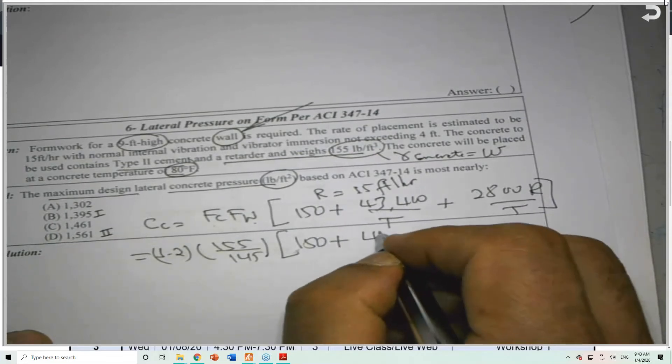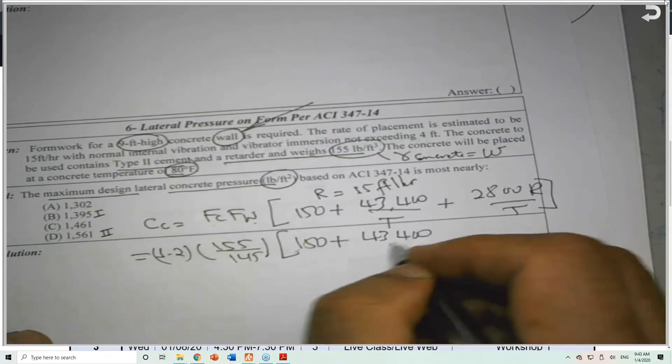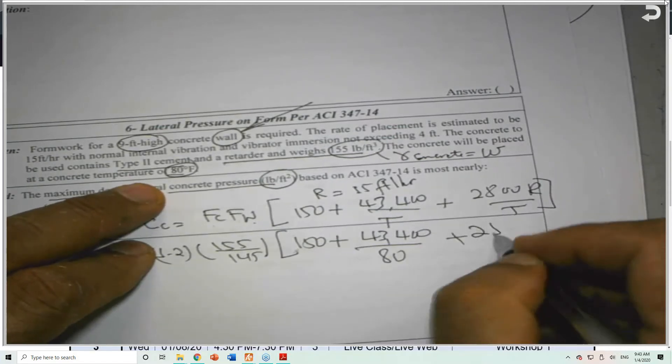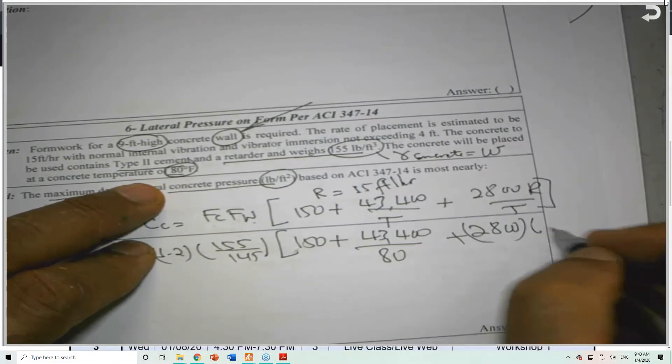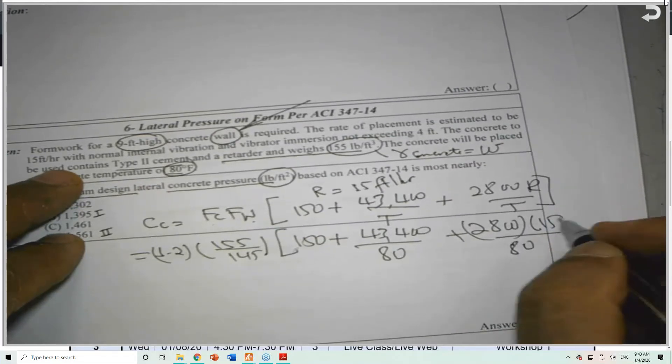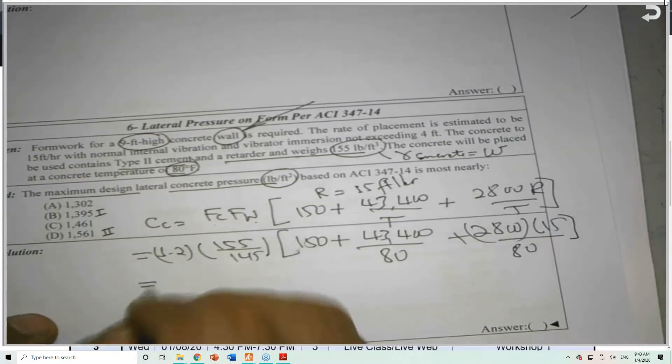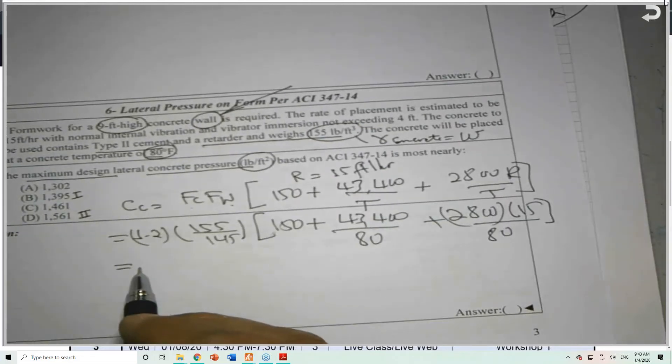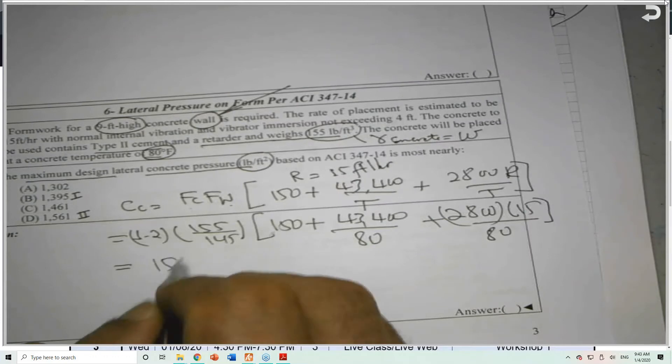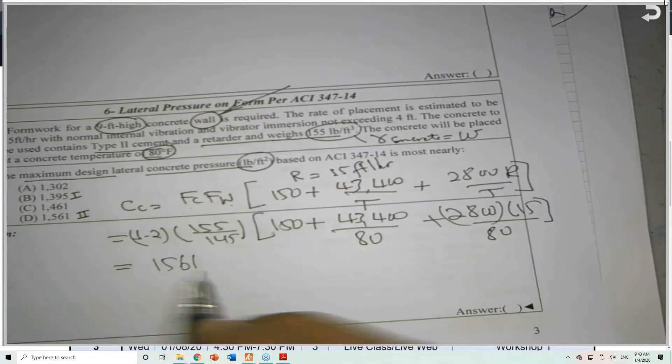And Fw is going to be 155 over 145, which is the base, times 150 plus 43,400 over the temperature 80, plus 2800 times R which is 15, divided by the temperature 80. Math is the easy part. Anybody did this math? What did you get? 1561. And this is pounds per square foot. And we are lucky because we have an answer to match that.